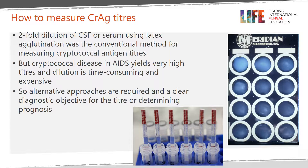How to measure CRAG titers. On the right, you can see the latex agglutination test. Two-fold dilution of CSF or serum using this latex agglutination test historically has been the conventional method for measuring cryptococcal antigen titers. But cryptococcal disease and HIV can yield very high titers, and this dilution becomes time consuming and expensive.